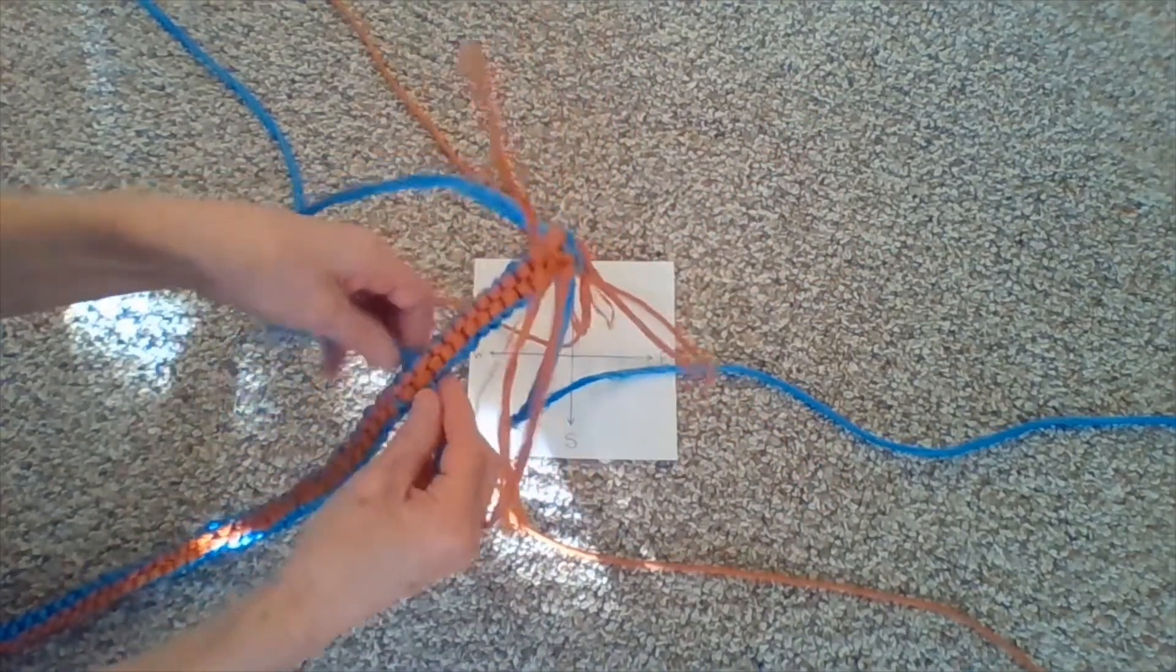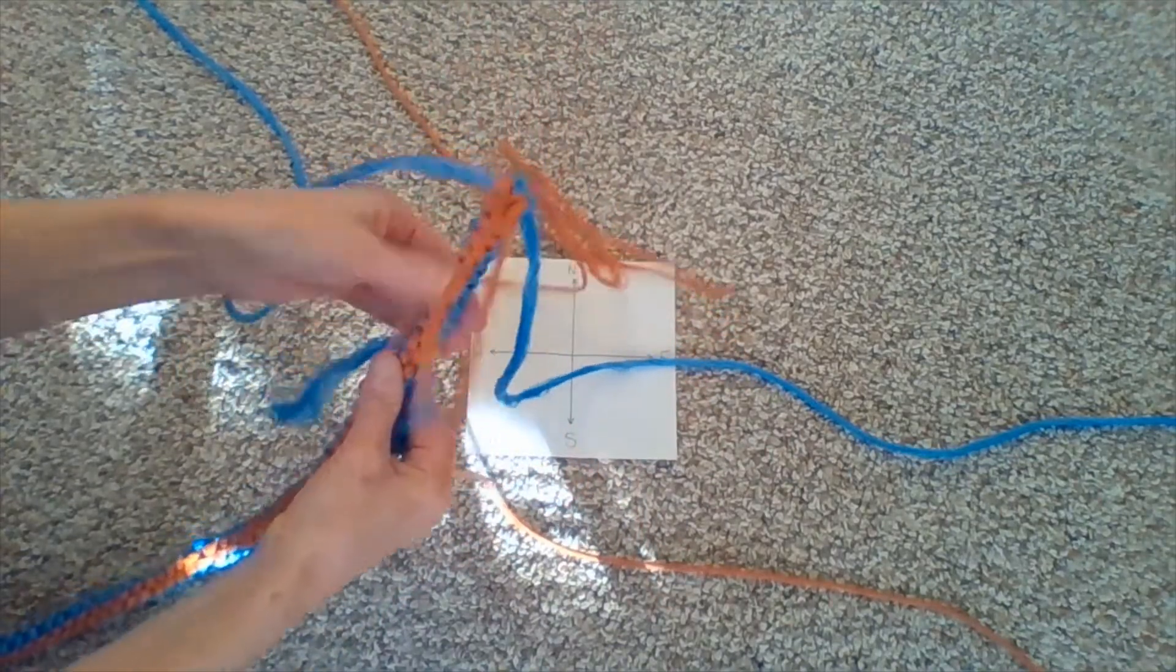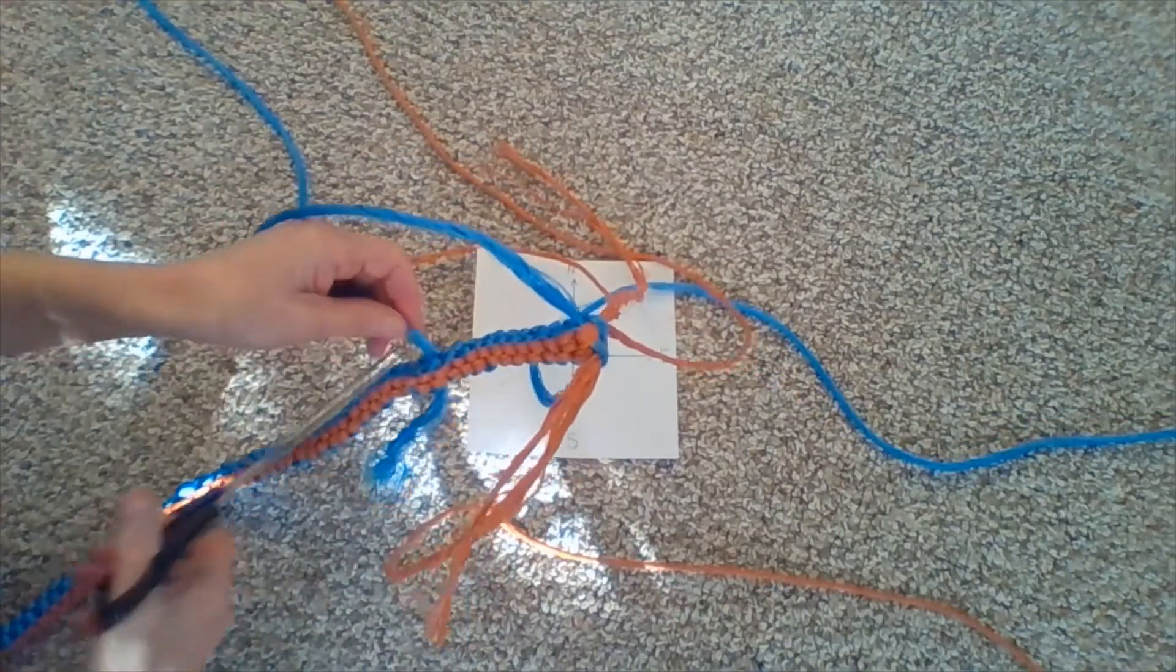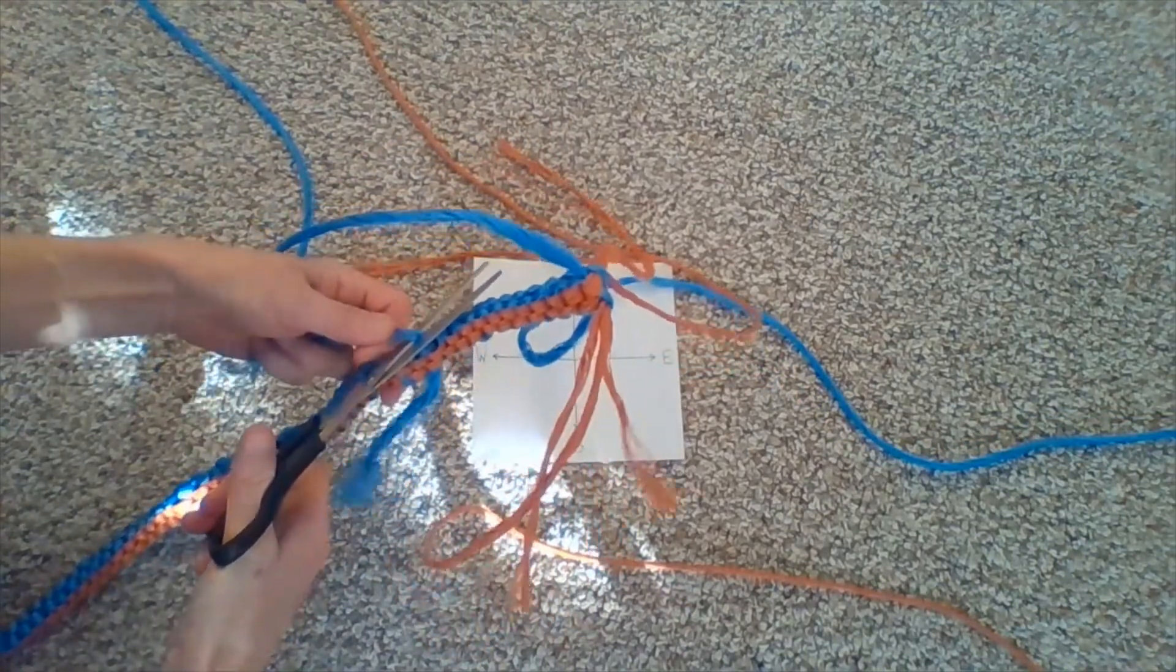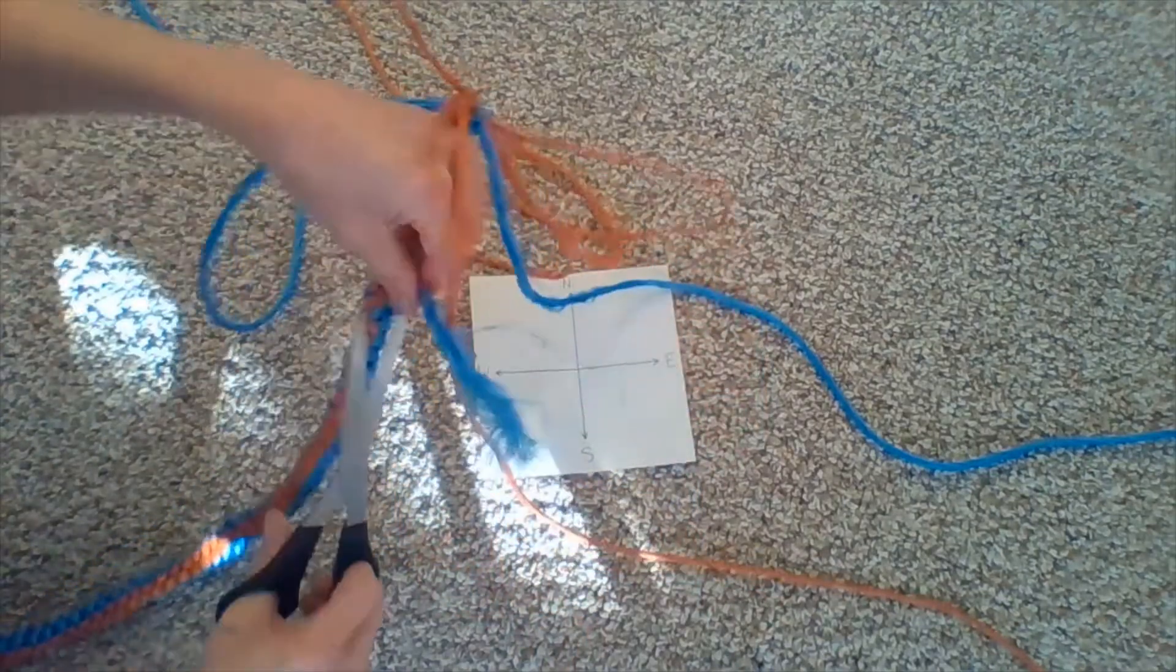And then after a few rows, give the rein a good tug and then just trim the short pieces off right next to your work.